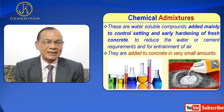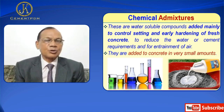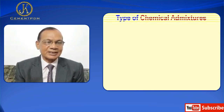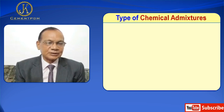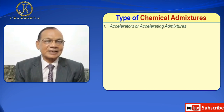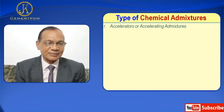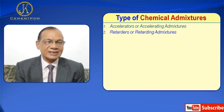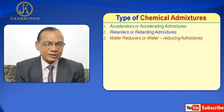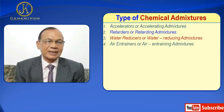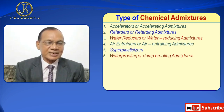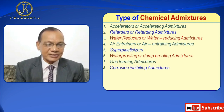Types of chemical admixtures — there are many types. The main ones are: number one, accelerators or accelerating admixtures; number two, retarders or retarding admixtures; number three, water reducers or water-reducing admixtures; number four, air-entraining admixtures; number five, superplasticizers; number six, waterproofing or damp-proofing admixtures; number seven, gas-forming admixtures.